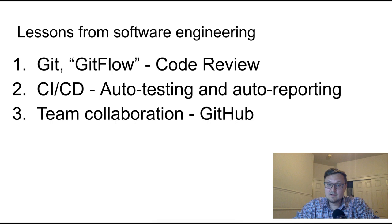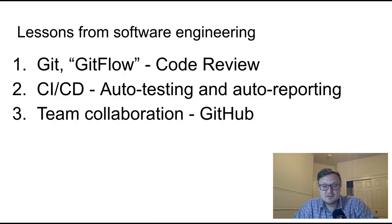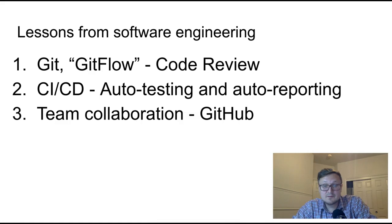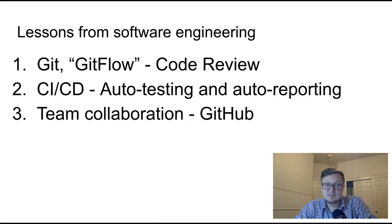What lessons can we get from the software engineering experience? First of all, it's version control. Version control is the foundation behind automation and software development. All the automation in software development is based on version control tools — today it's usually Git. We're talking not only about versioning code, but also about workflow, code review, automating tests and CI/CD processes, and even team collaboration is based on version control tools like GitHub or GitLab.